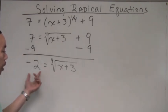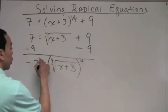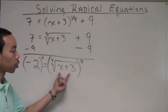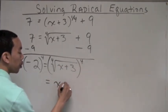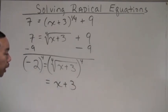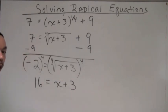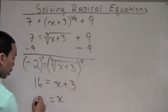Step two says raise both sides to a power dependent upon the index. The index is 4, so we raise both sides to the 4th power. Raising the fourth root of (x plus 3) to the 4th power leaves x plus 3. Negative 2 to the 4th: 2×2=4, 4×2=8, 8×2=16, and since the exponent is even, the result is positive 16. So 16 equals x plus 3, and solving gives x equals 13.